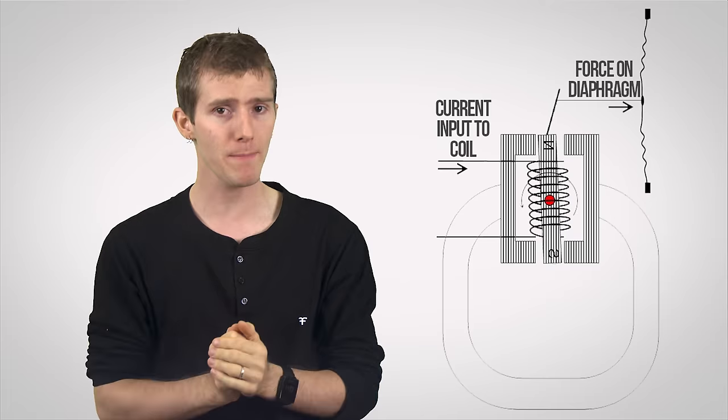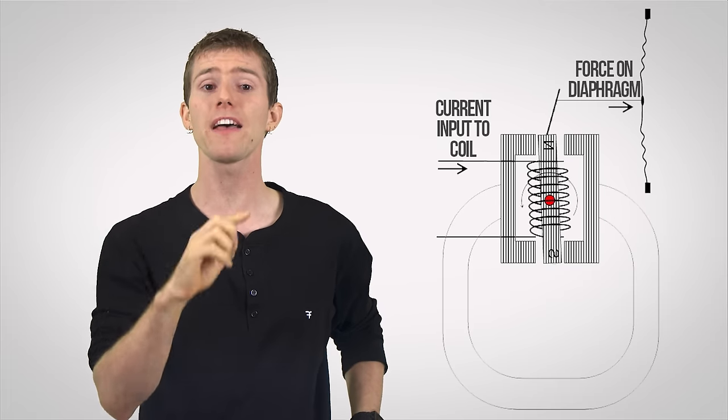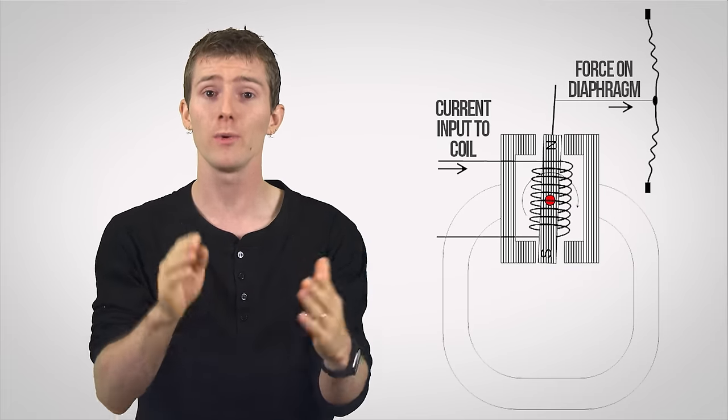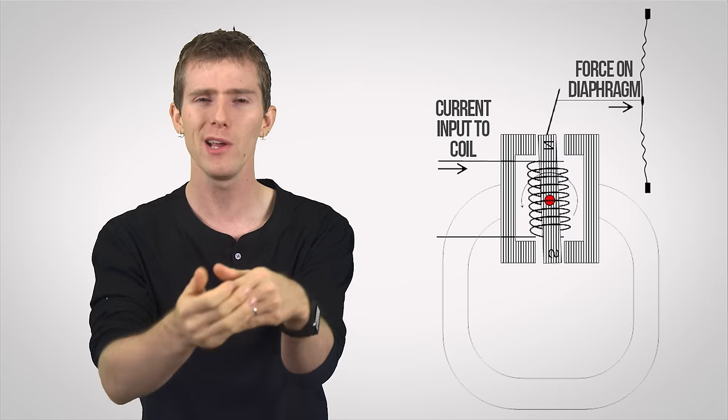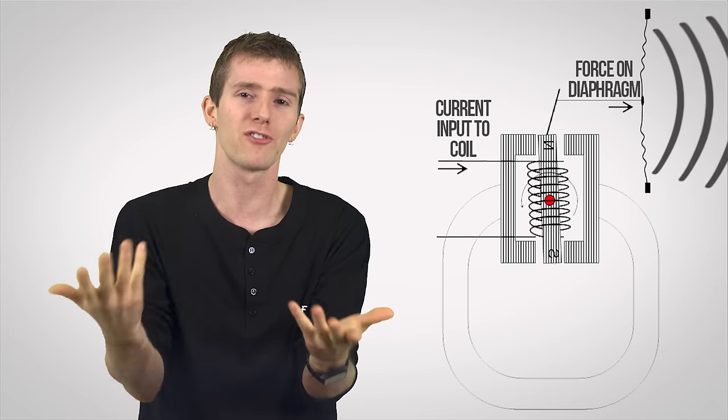Then, when a current passes through the coil, it causes the armature to pivot, passing vibrations to the drive rod, which is attached to the center of a diaphragm, and the movements of the drive rod cause vibrations in the diaphragm, creating the sound that you hear. Common theme here, right?